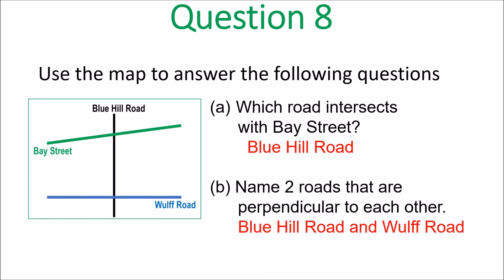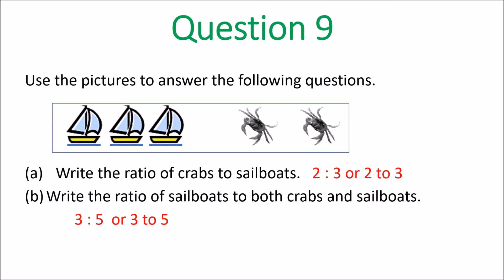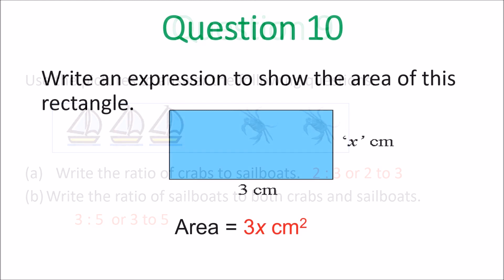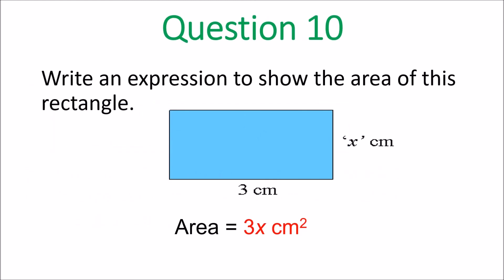And question 8. Which road intersects with Bay Street, Blue Hill Road. And then Blue Hill Road and Wolf Road are perpendicular to each other. They meet at the right angle. Question 9. Ratio 2 to 3. Or 2:3. Two ways to write it. Or 3 to 5. Or 3:5. Two ways to write that for question 9. Any of those is correct. And area. 3x centimeters squared. So 3x square centimeters. That's how you have to write it. And you must put square units.